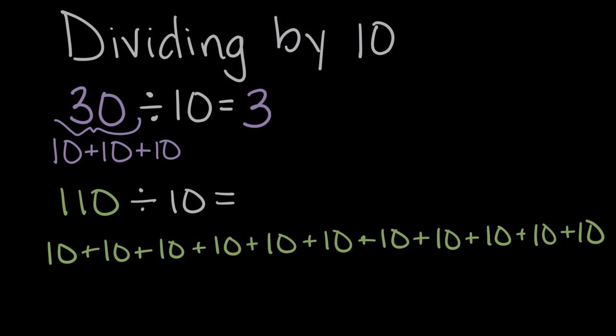So let's see how many groups is that. 1, 2, 3, 4, 5, 6, 7, 8, 9, 10, 11. Our solution is 11. If we have 110 and we divide it into groups of 10, we end up with 11 groups.